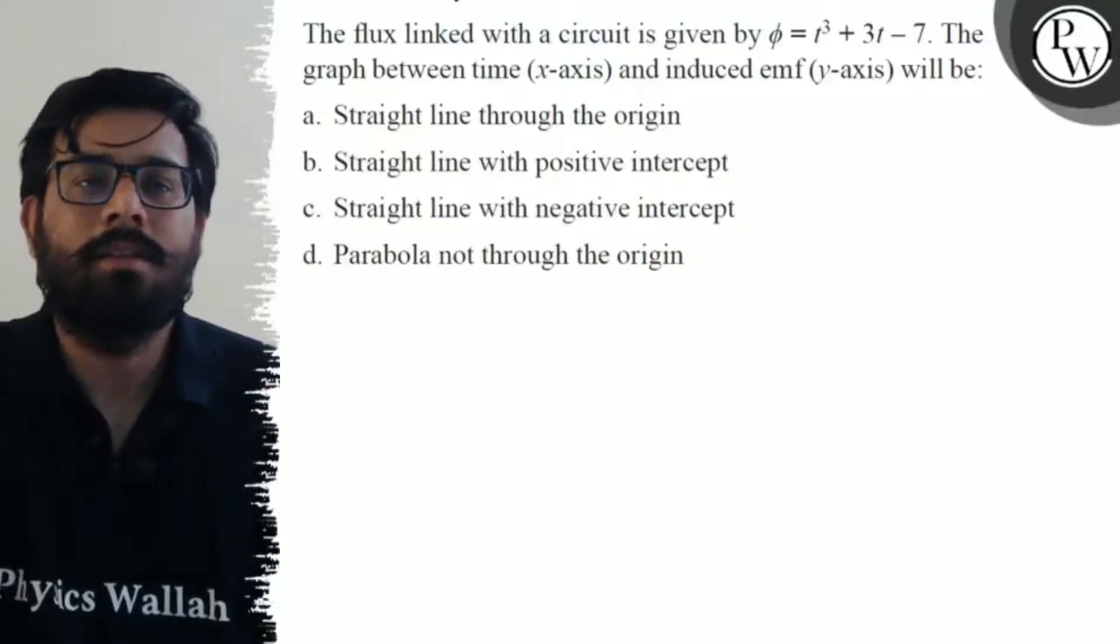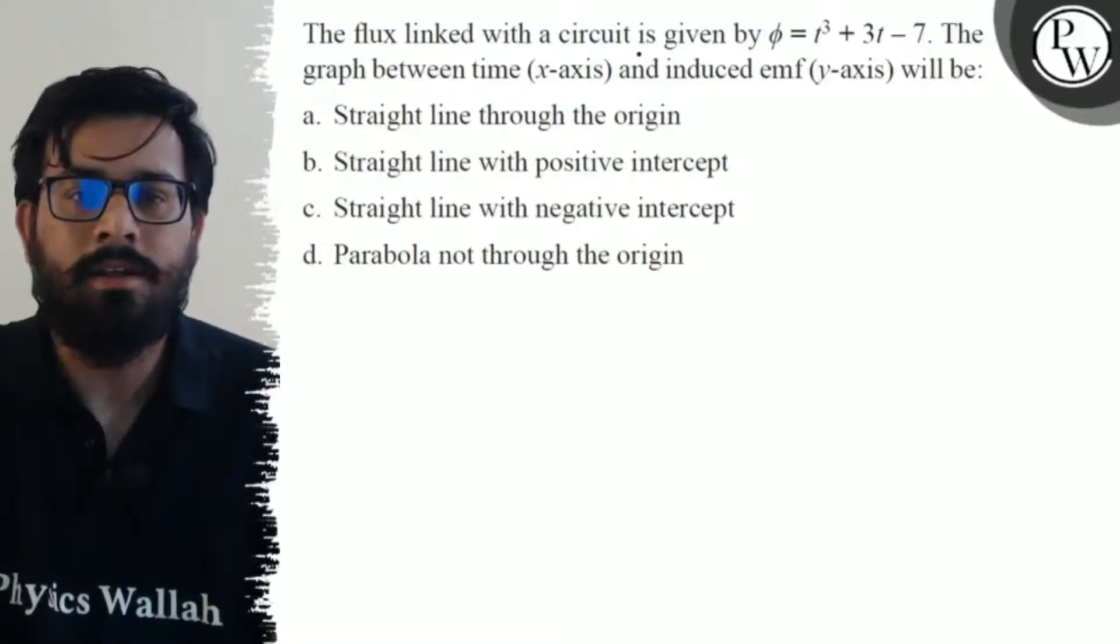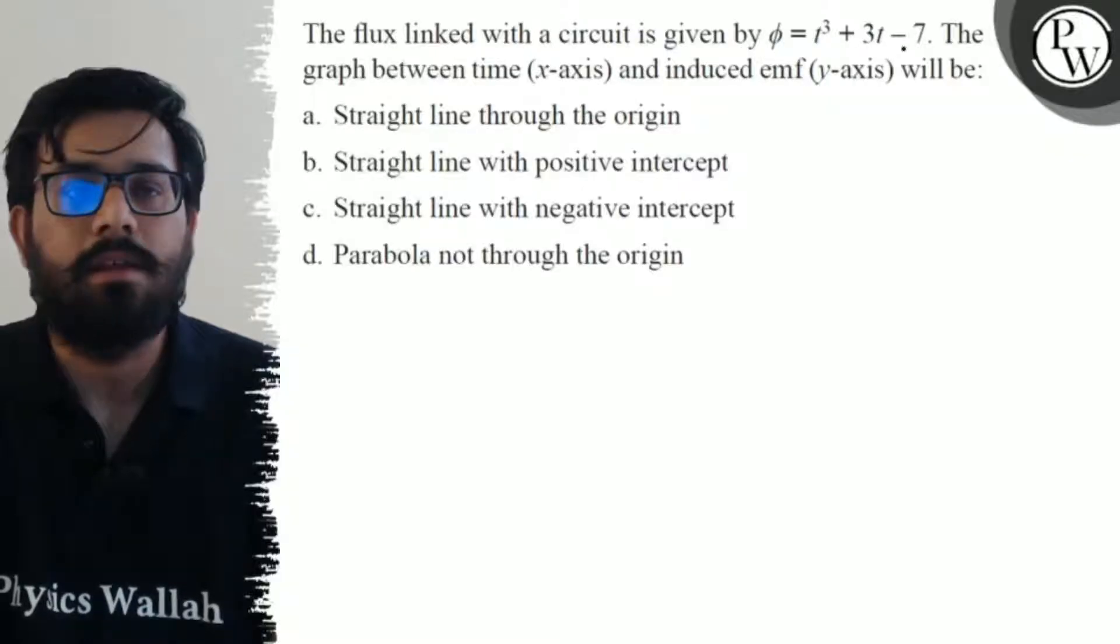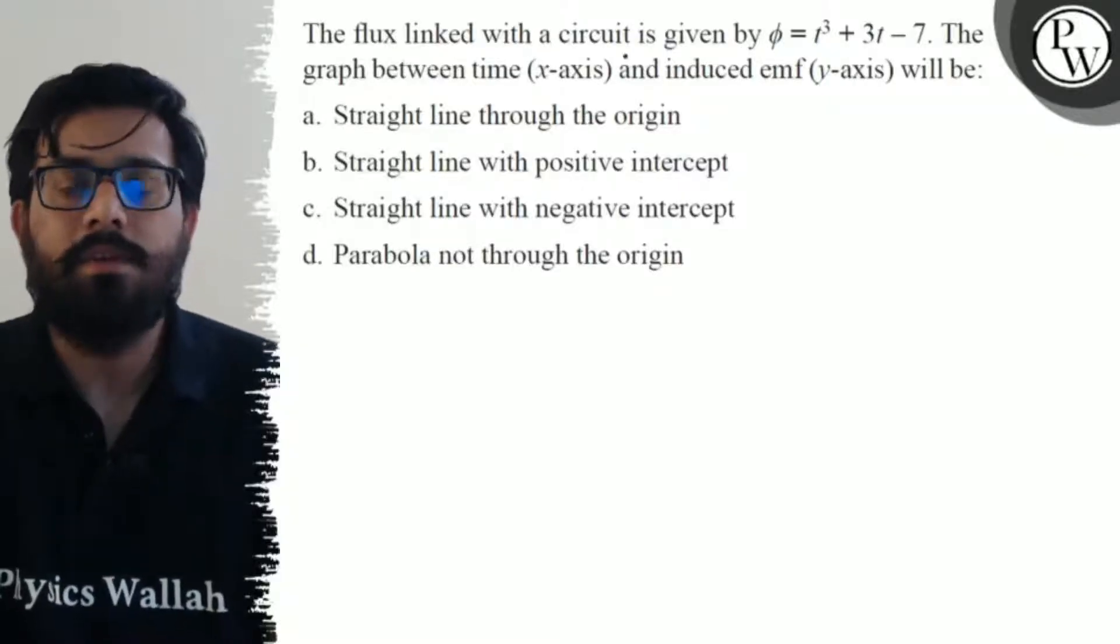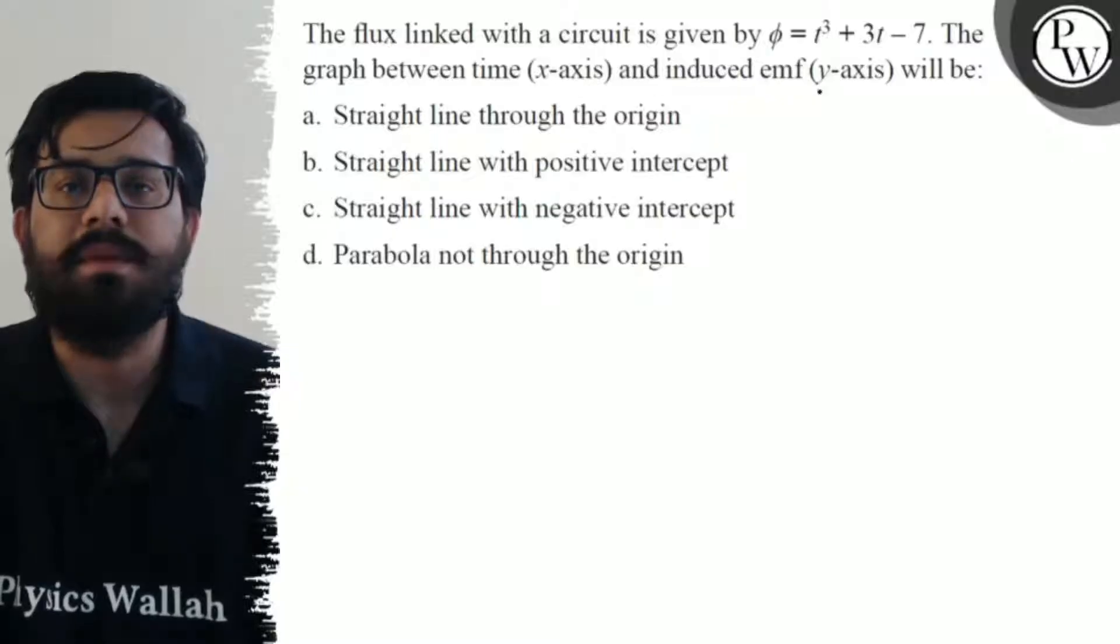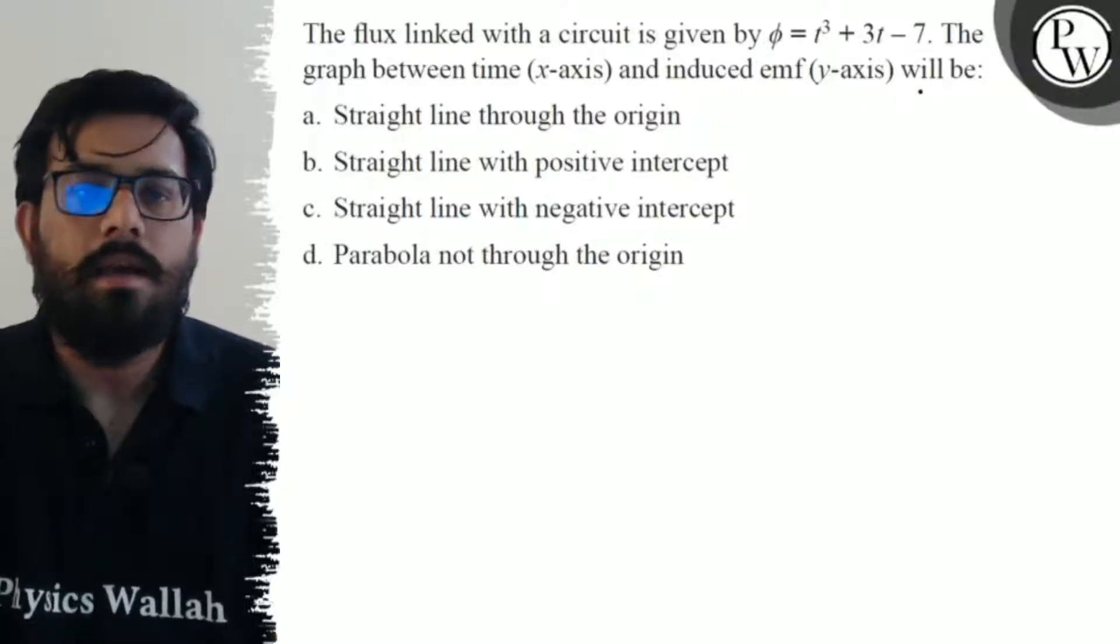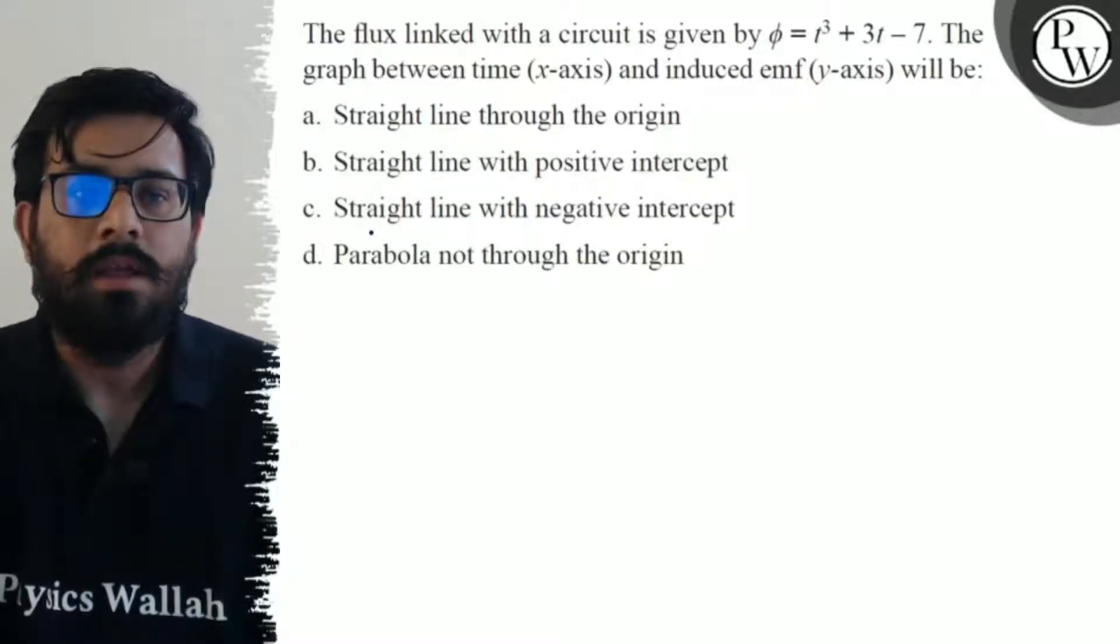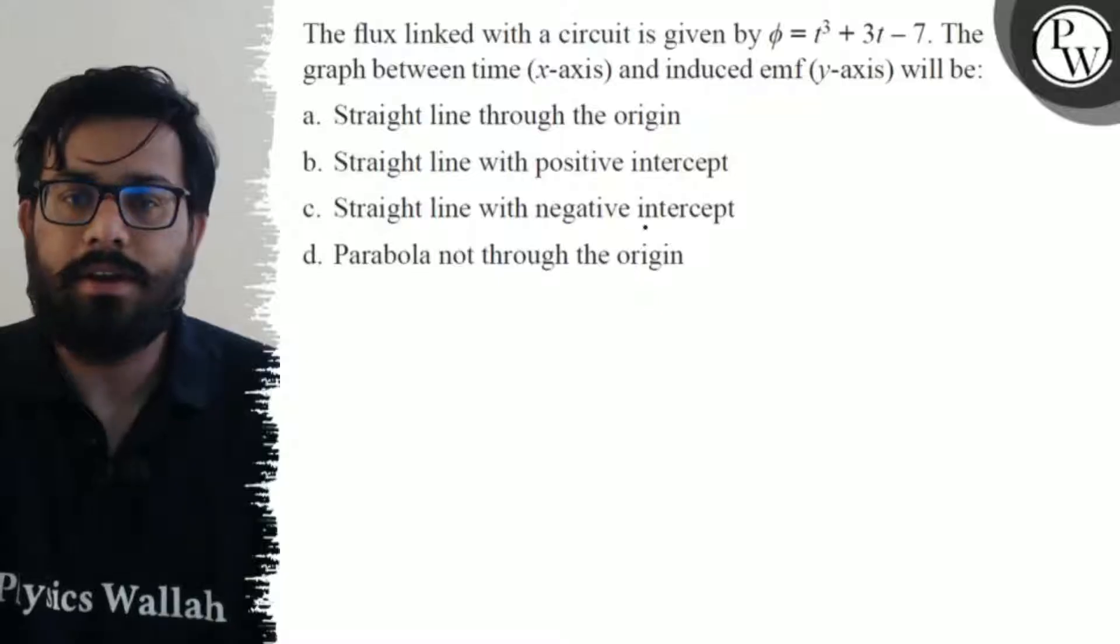Hello, so let's see the question. The flux linked with a circuit is given by φ = t³ + 3t - 7. The graph between time, which is along the x-axis, and the induced EMF, which is along the y-axis, will be: first option is straight line through the origin, second option is straight line with positive intercept, third option is straight line with negative intercept, and the fourth option is parabola but not through the origin.